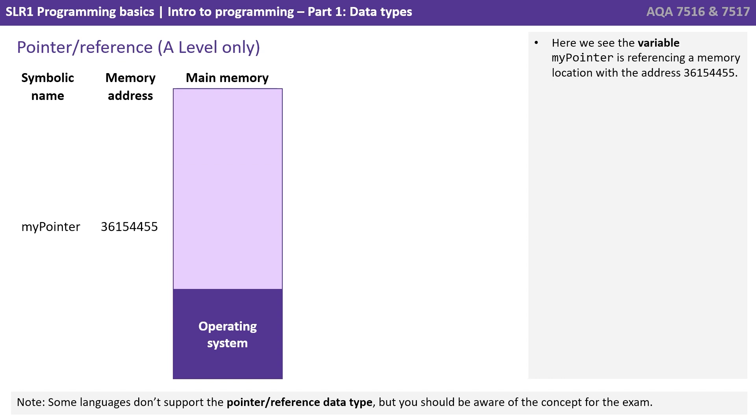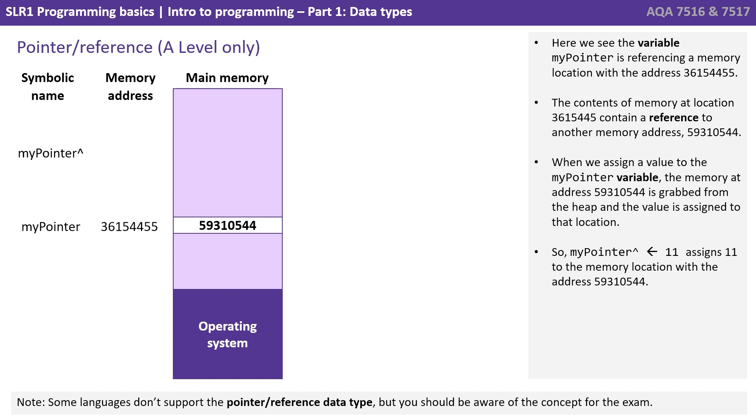So here we see the variable, my pointer is referencing a memory location, 36154455 in this case. The contents of memory at that location contain a reference to another memory address. In this case, 59310544. When we assign a value to the my pointer variable, the memory at address 59310544 is grabbed from the heap and the value is assigned to that location. So my pointer becomes equal to 11. It assigns 11 to the memory location with the address 59310544.